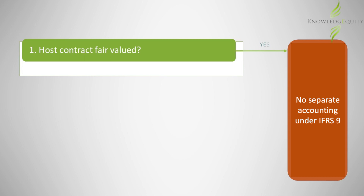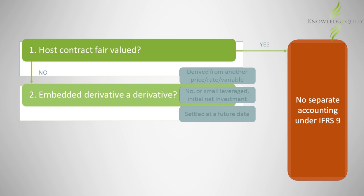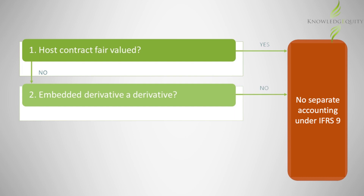Secondly, does the embedded derivative meet the accounting definition of a derivative? That is, its value changes in response to changes in an underlying price, rate or other variable; it doesn't require an initial net investment, or only requires a small leveraged initial net investment; and it is settled at a future date. If it doesn't meet the definition of a derivative, then it won't be separately accounted for.